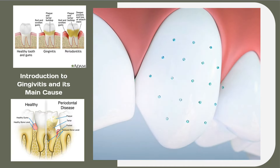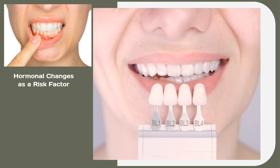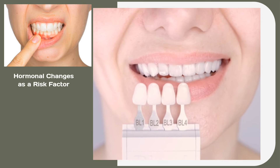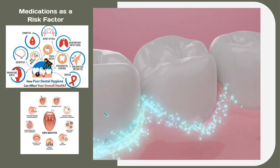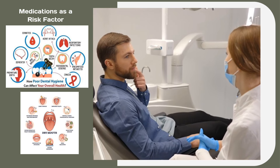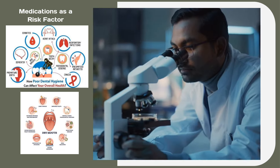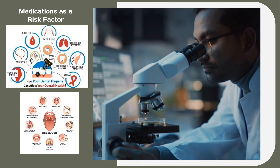Some factors, however, can increase the likelihood of this infection. Hormonal changes during pregnancy, puberty, menopause, or the menstrual cycle can increase the sensitivity of the teeth and the likelihood of gum infections. Certain medications can affect the health of the oral cavity, causing a decrease in saliva production or the formation of an abnormal layer on the gums. These include anticonvulsants like Dilantin, and drugs for hypertension like Procardia and Adalat.